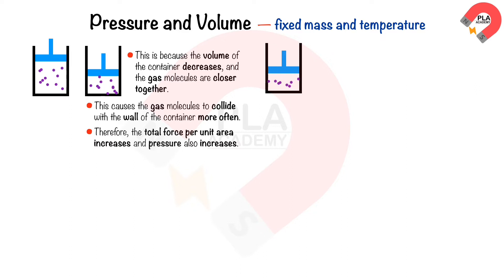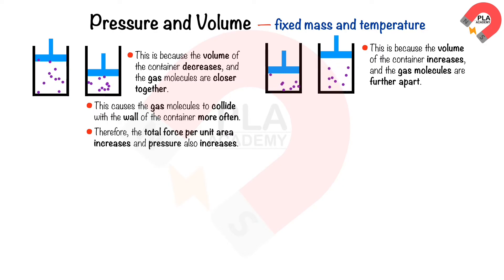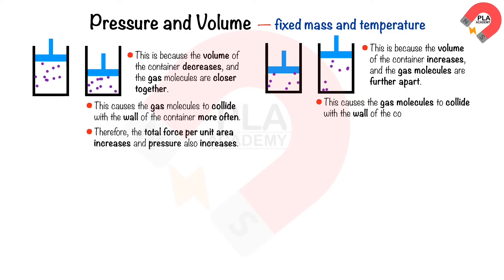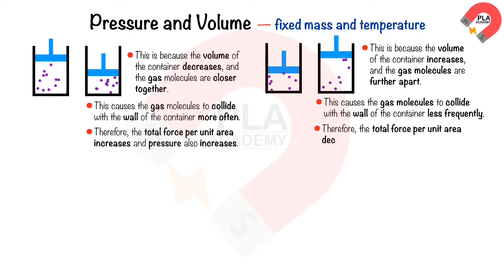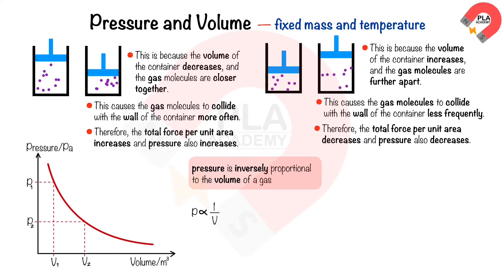If the temperature and mass of a gas remain constant, the pressure of the gas decreases when it is expanded. This is because the volume of the container increases and the gas molecules are further apart, causing them to collide with the wall of the container less frequently. Therefore, the total force per unit area decreases and pressure also decreases. From this information, we can see that pressure is inversely proportional to the volume of a gas. The graph of pressure in Pascals against volume in cubic metres is a reciprocal graph, as shown in the diagram.